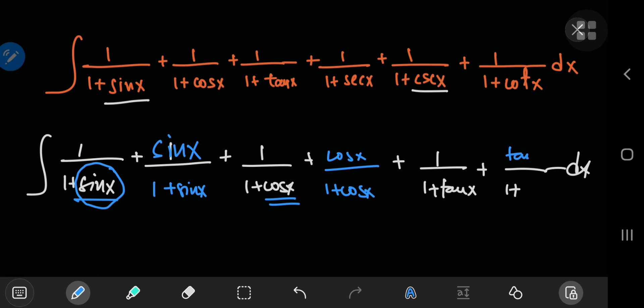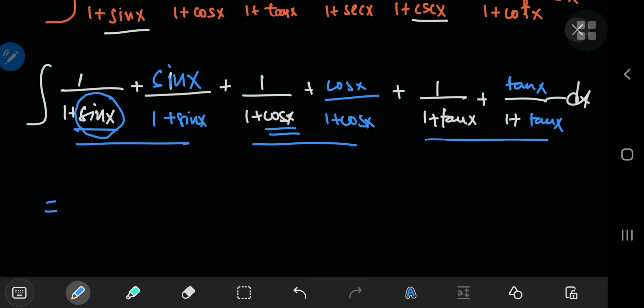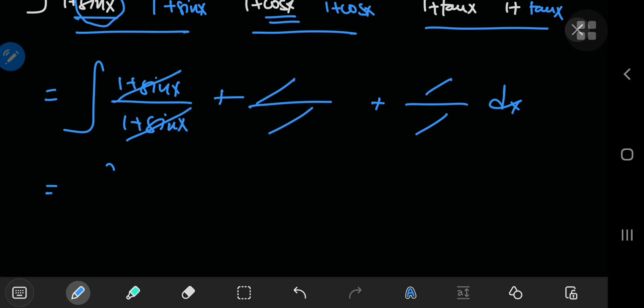You have a bunch of common denominators here that really make things a lot more simple. You have 1 plus sine of x divided by 1 plus sine of x, and you get the idea. They cancel out, right? So you're gonna have three cancellations like this, and you're gonna be left with 1 plus 1 plus 1, which is 3.